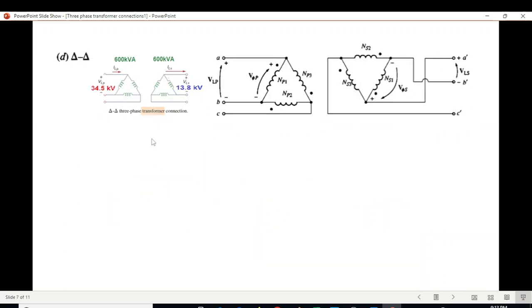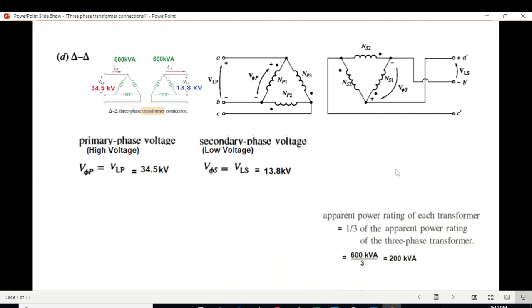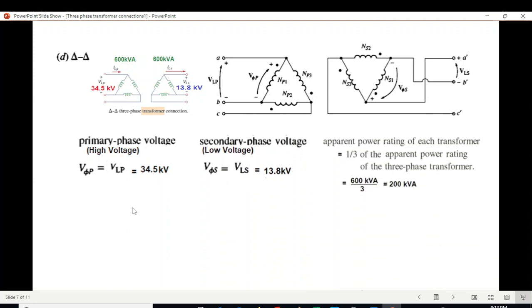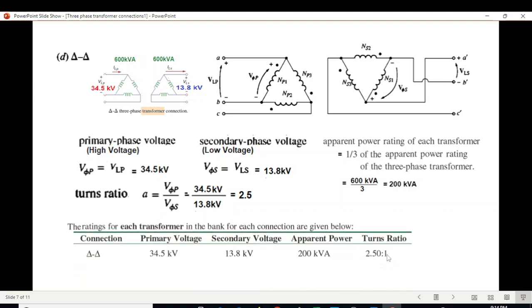Delta-Delta connection: line voltage and phase voltage are the same on primary side and secondary side. So primary phase voltage 34.5, secondary phase voltage 13.8. Power remains the same. Turn ratio calculated is 2.5. In tabular form we enter this. So these are all four basic circuits.